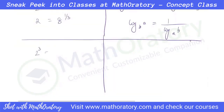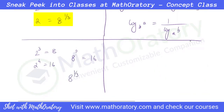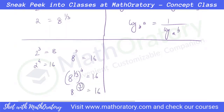Two cubed equals eight and two to the power four equals sixteen. To find the power of eight which gives sixteen, instead of going directly from eight to sixteen, let me take a route via two. From eight to two I take one-third power, then raise it to four to get sixteen — giving eight to the power four by three. So that is the power.